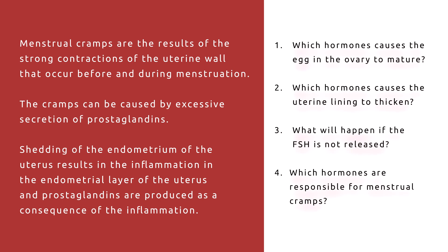Please answer these questions: Which hormones cause the egg in the ovary to mature? Which hormones cause the uterine lining to thicken? What will happen if FSH is not released? And which hormones are responsible for menstrual cramps?